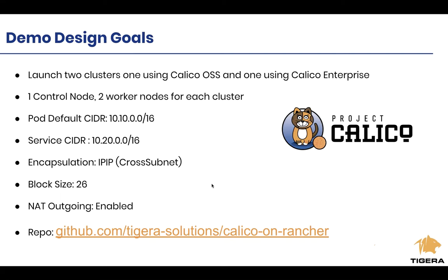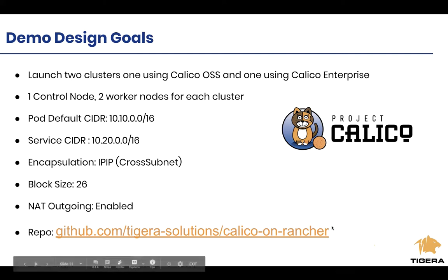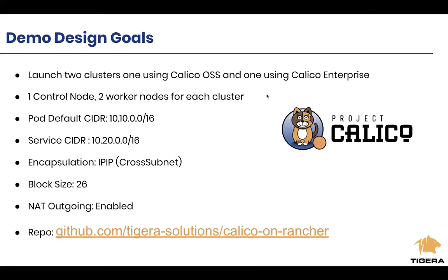I summarized some of those items in a GitHub page that I'll add in the chat — you can always reference it and there are configuration samples there. For the next 20 minutes or so, I want to walk you through how to configure Calico with Rancher as a default CNI, and then also walk you through how to use Calico Enterprise on Rancher. I'll use an example of launching two clusters: one using Calico open source and one using Calico Enterprise.